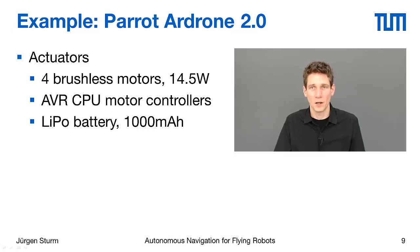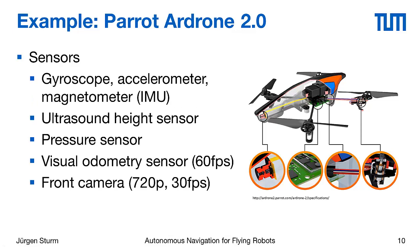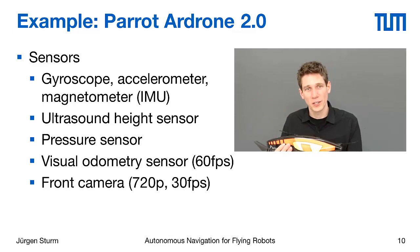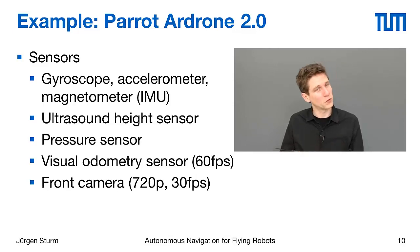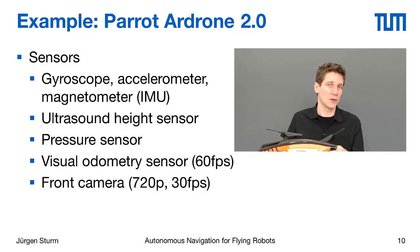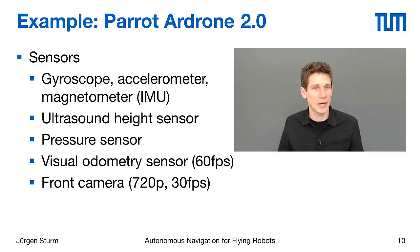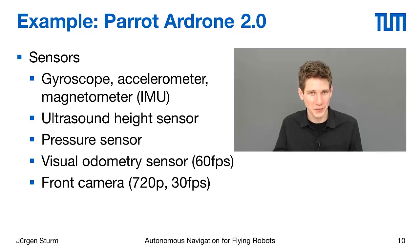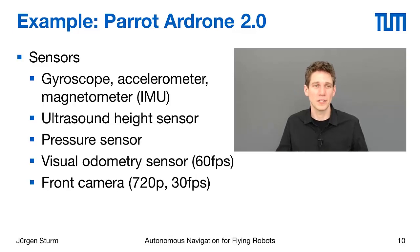The Parrot AR Drone has an integrated inertial measurement unit consisting of a 3-axis gyroscope, a 3-axis accelerometer, and a compass or magnetometer. There is also an ultrasound sensor to measure distance to the floor, and additionally a pressure sensor for use when the ultrasound sensor doesn't work — for example, ultrasound only has a range of about 3 meters, so at greater heights the pressure sensor tells you your flying height. There is also a visual odometry camera running at 60 frames per second, whose images we will use for tracking the quadrotor's position.